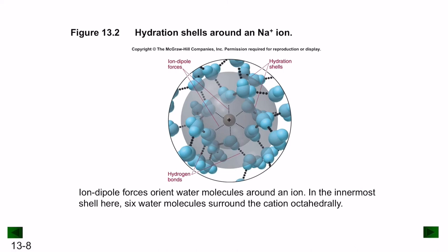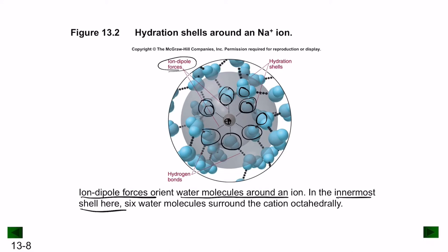An example is the hydration shell that forms around ions. When you mix an ionic substance in water, the positively charged ion is surrounded by the negatively charged oxygen of water molecules. The hydrogen bonds between water molecules are replaced by ion-dipole forces, which are nearly similar in strength, so replacement is easy. Ion-dipole forces orient water molecules around the ion; in the innermost shell, six water molecules surround the cation in an octahedral structure.